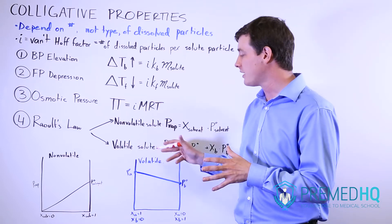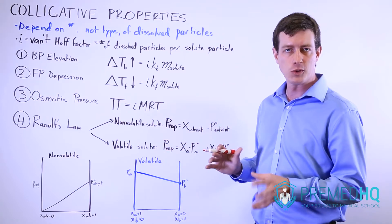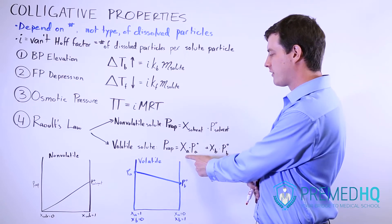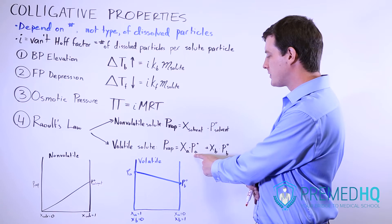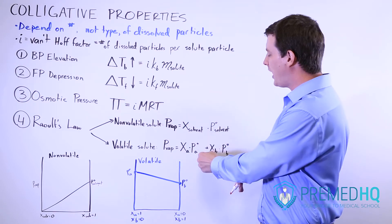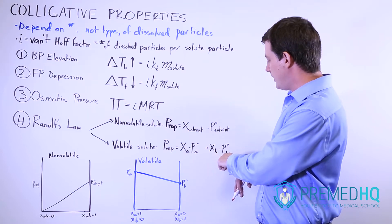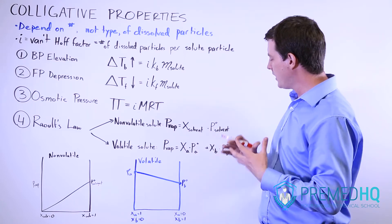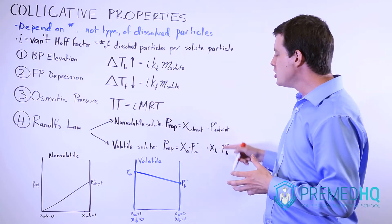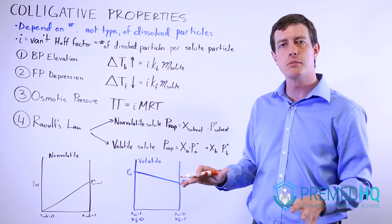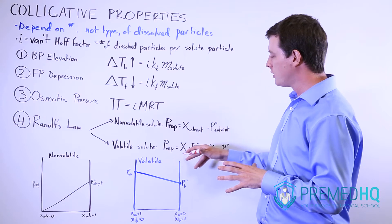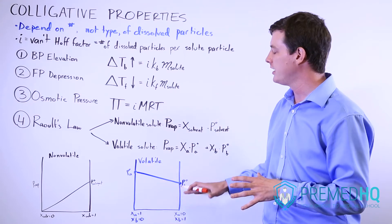When dealing with volatile solutes, you use a different form of Raoult's Law. You must consider the mole fraction of component A times the vapor pressure over pure A, and then add to that the mole fraction of component B multiplied by the vapor pressure over pure B. Each component contributes to the total vapor pressure in proportion to its mole fraction.